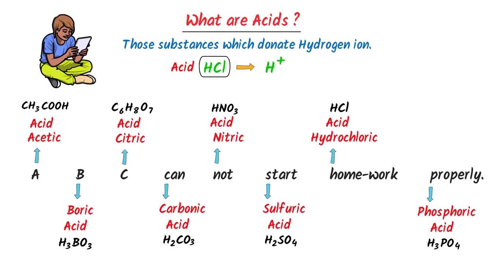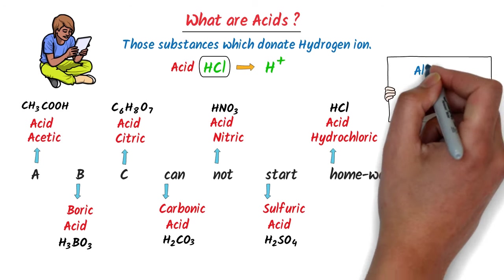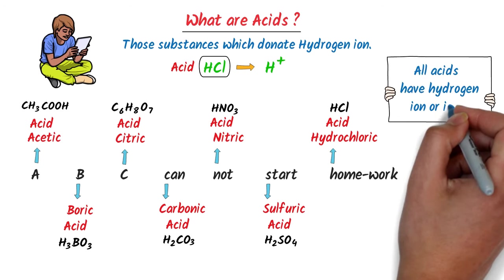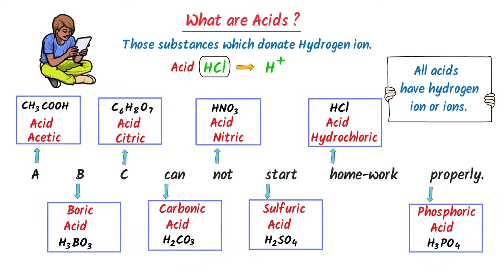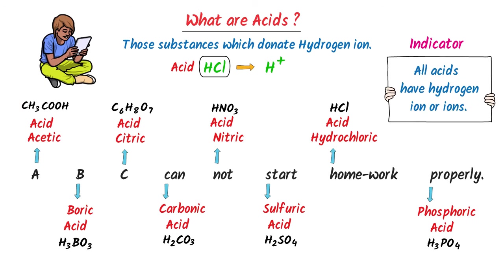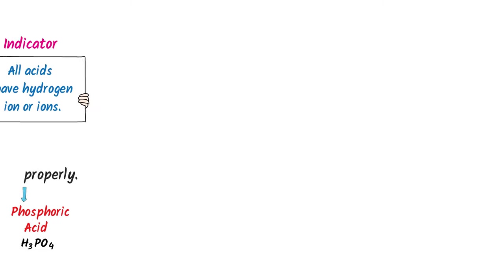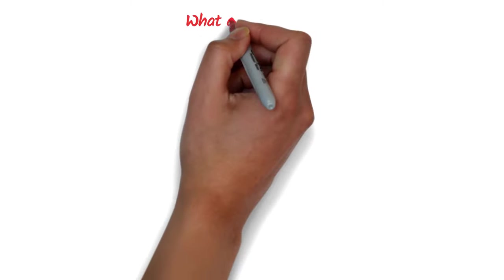Remember that all these acids have hydrogen ion — all these acids have hydrogen ion. So hydrogen ion is the best indicator of an acid. Note down this important list of acids.